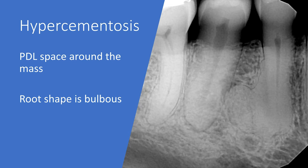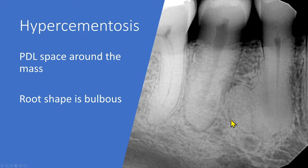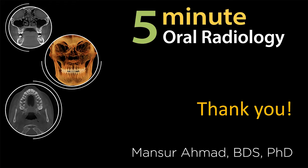Hypercementosis is a well-defined homogeneous radiopacity that is continuous with the root, with no demarcation between the root and the area of hypercementosis. You can trace the periodontal space around the outline of the hypercementosis. The density is similar to tooth structure — similar to dentine — and the root does not appear resorbed. Thank you very much; please come back for another video. See you soon.